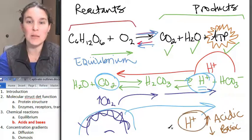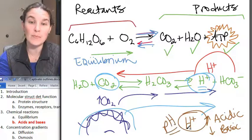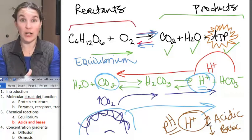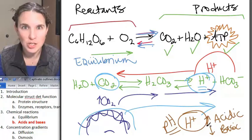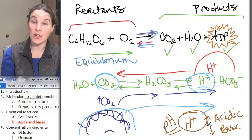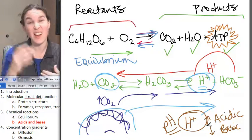Hydrogen ions determine pH. So the more hydrogen ions you have, the more acidic, the lower the pH. The fewer hydrogen ions you have, the more basic, the higher the pH.